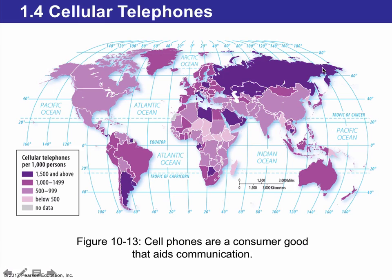Cellular telephones are another measure of how we use consumer goods. A high number of telephones per thousand people is a good indicator of development. For example, Argentina has 1,500 and above cell phones per every thousand people, which aids communication. Nations in Sub-Saharan Africa have below 500 cell phones per thousand people, which is a low measure of development.